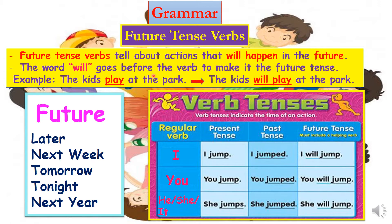So we use the word 'will.' The word 'will' goes before the verb to make it the future tense. For example, 'the kids play at the park' — 'play' is the verb. When do they play? They play now, so this verb is in the present tense. We add 'will' before the verb, so it becomes 'the kids will play at the park.'